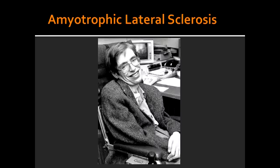What type of deficits are seen in patients suffering from Amyotrophic Lateral Sclerosis, also known as ALS or Lou Gehrig's disease? The deficits seen in ALS include combined upper motor neuron and lower motor neuron deficits, with no sensory, cognitive, or oculomotor deficits. In this patient, there are both upper and lower motor neuron signs.